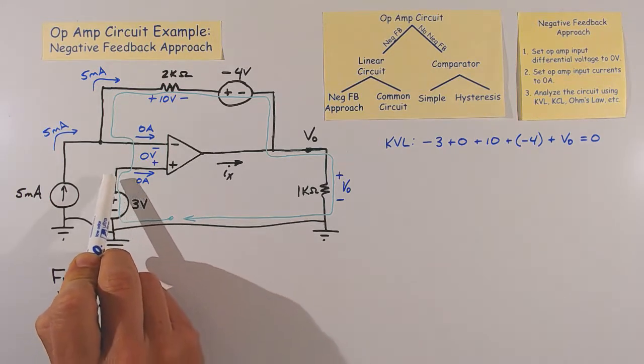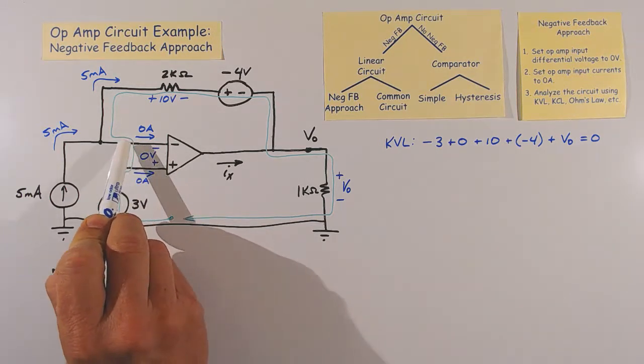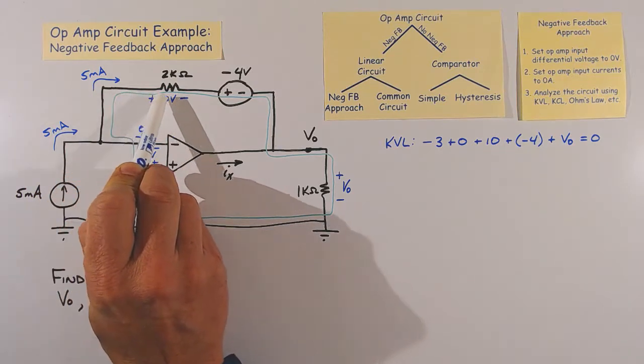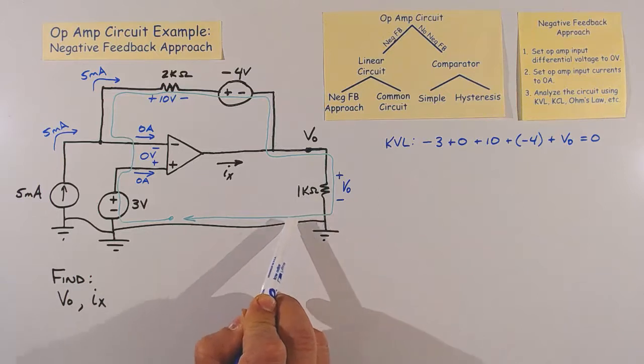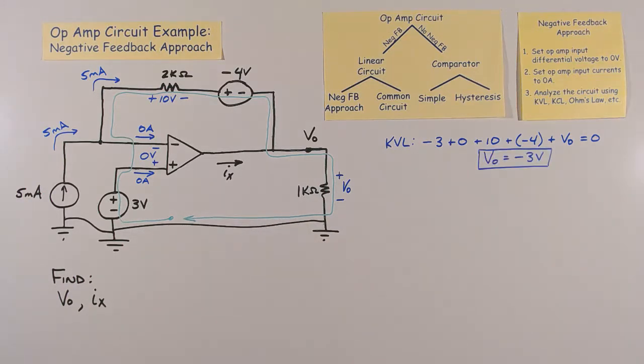Minus 3, plus 0, plus 10, plus negative 4, plus V0, equals 0. This means V0 equals negative 3 volts.